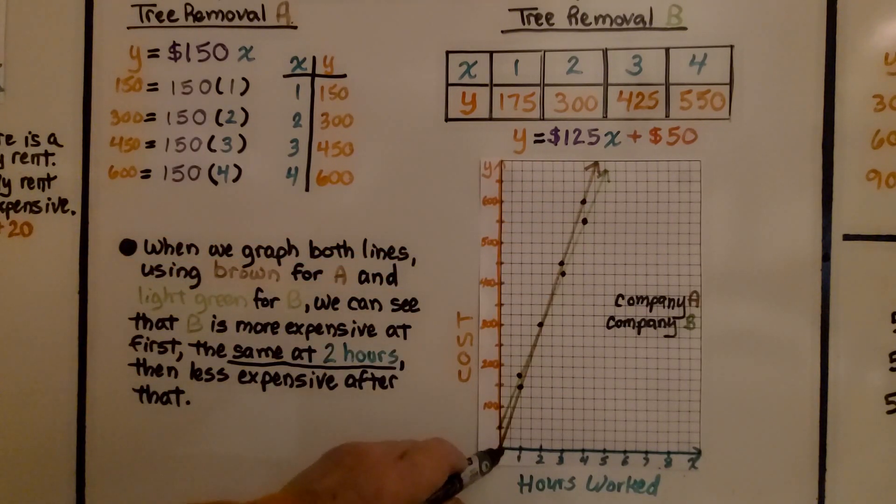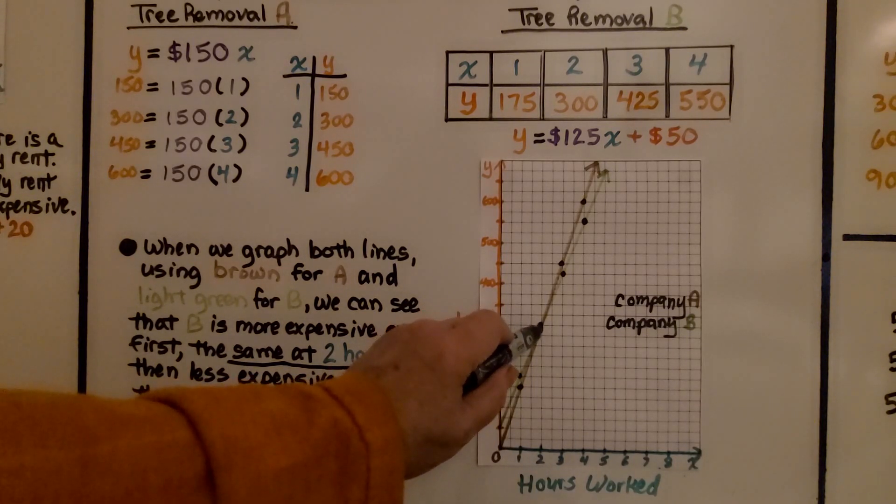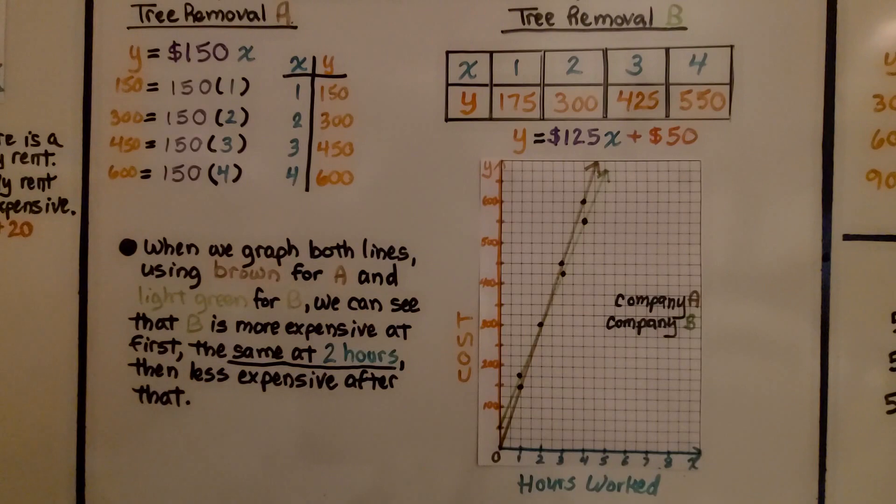So, for 1 hour, tree removal A is a good deal, and at 2 hours, it's the same deal. But, beyond that, tree removal B is the better deal. It's less expensive.